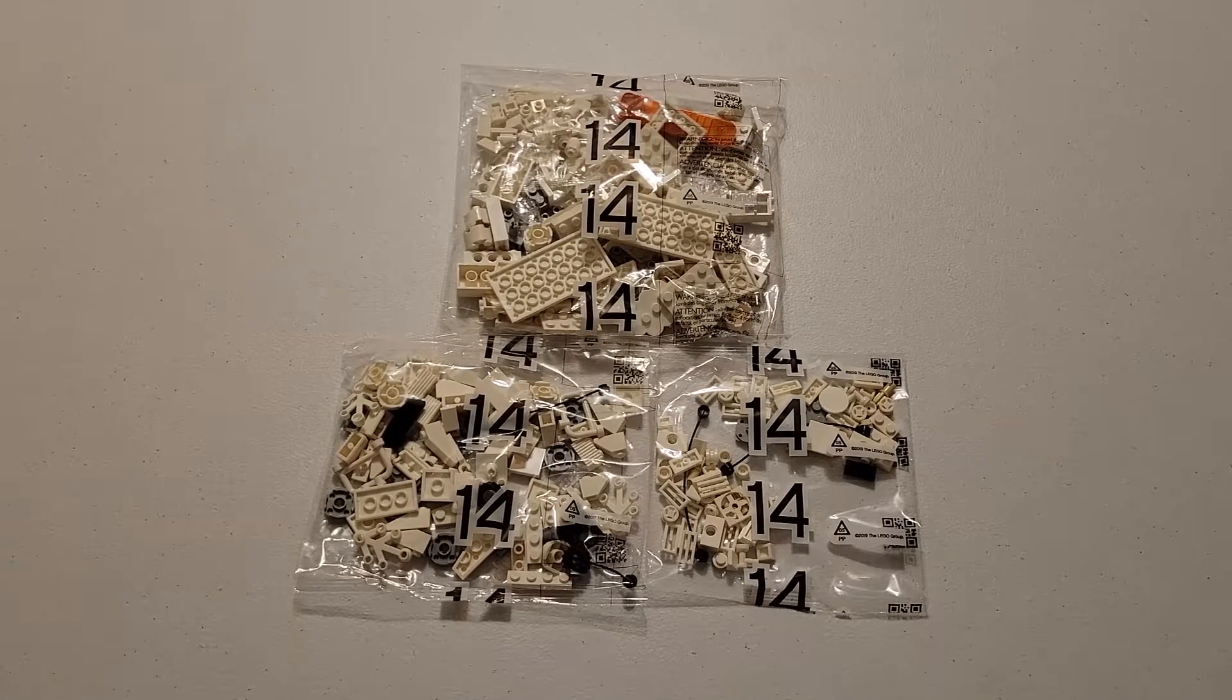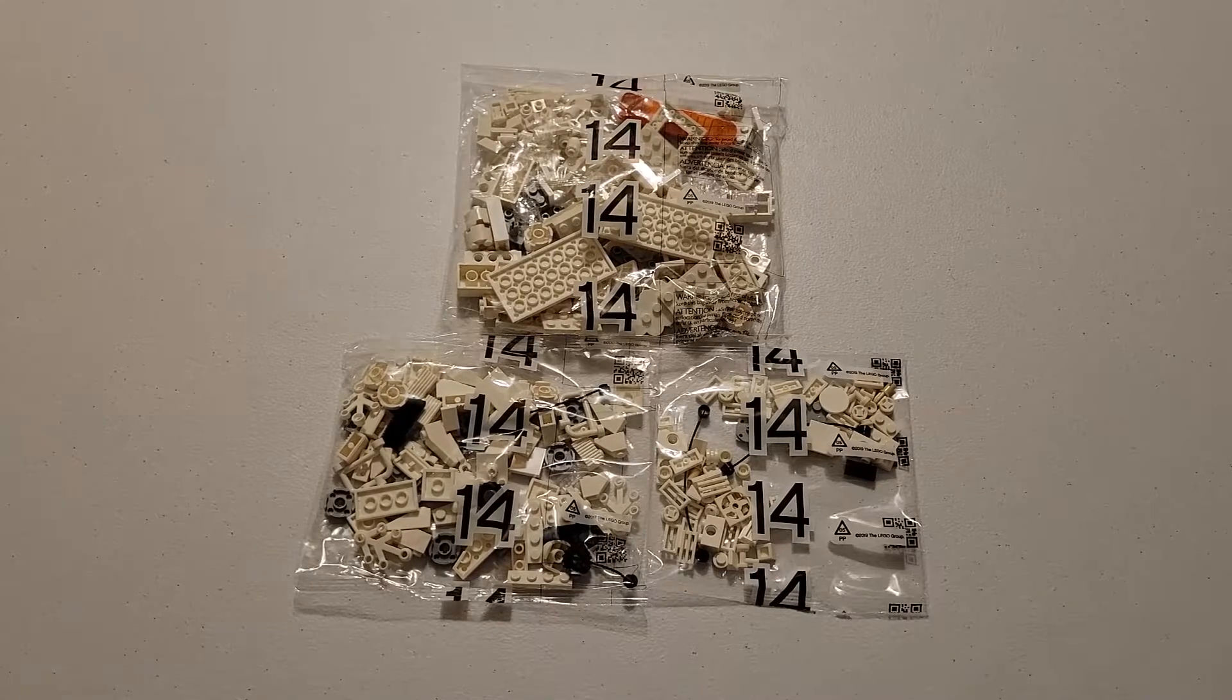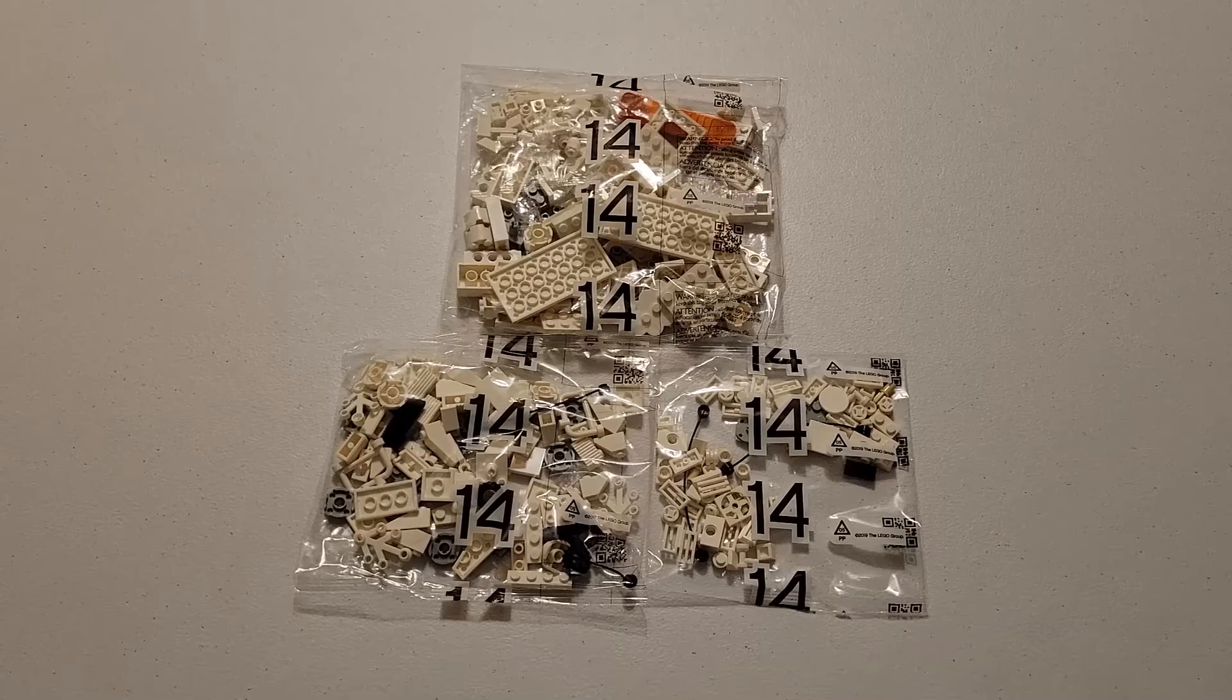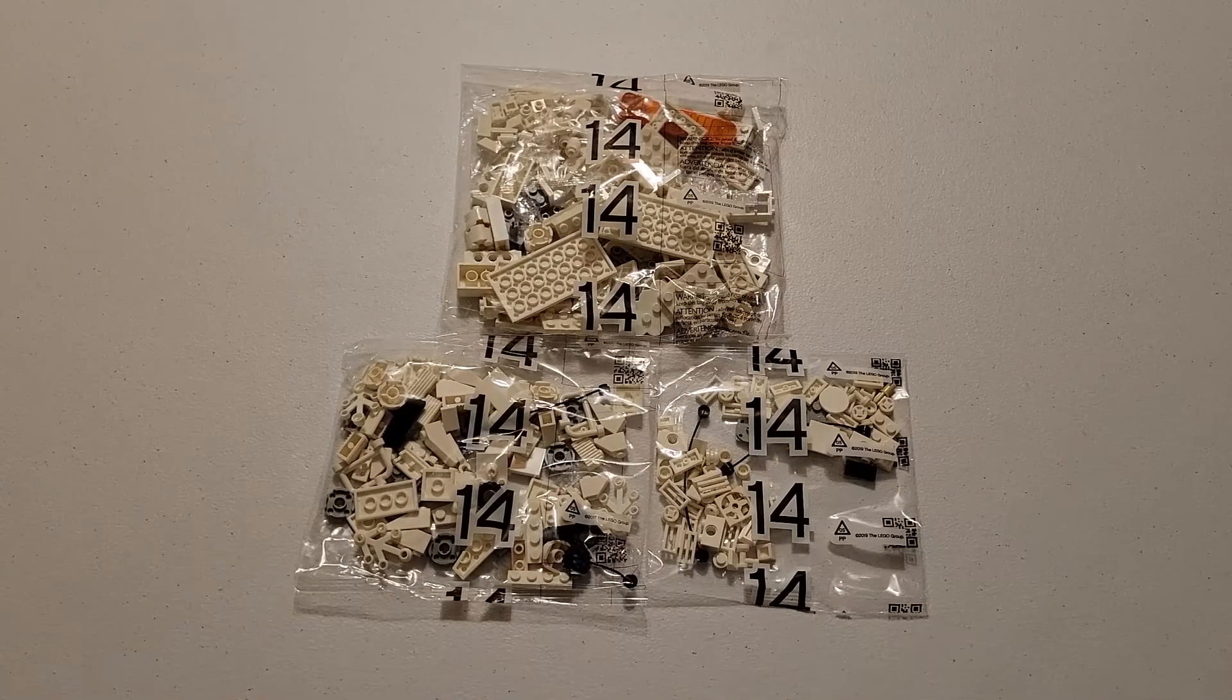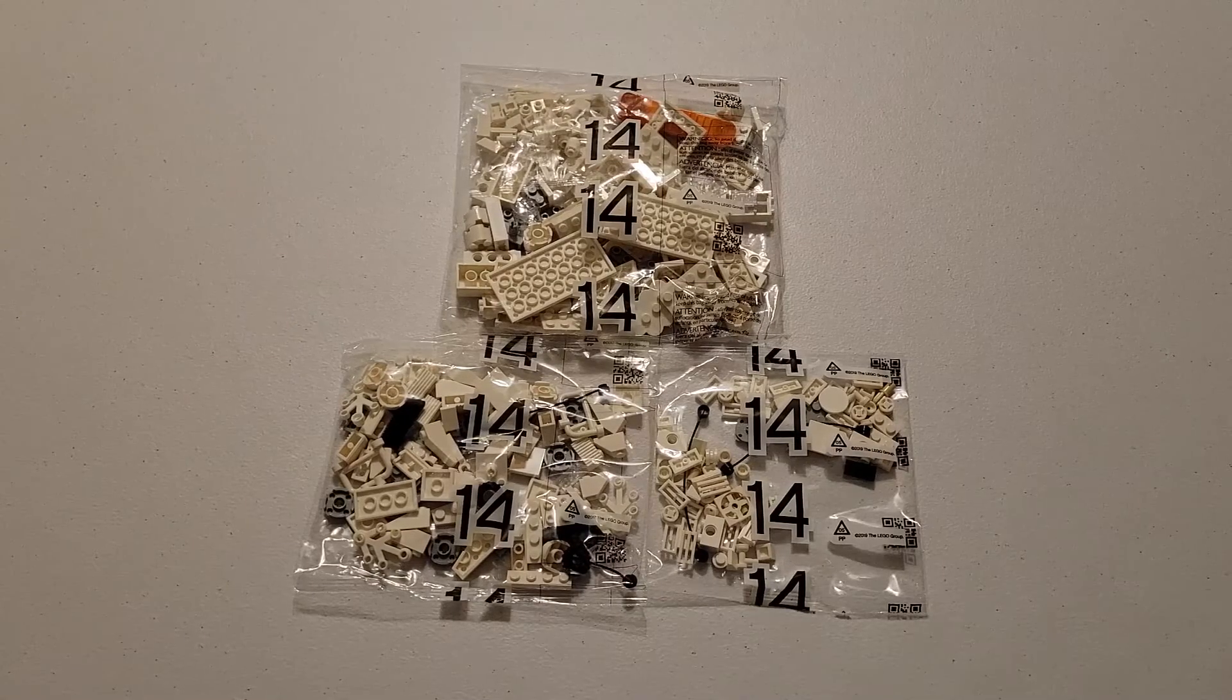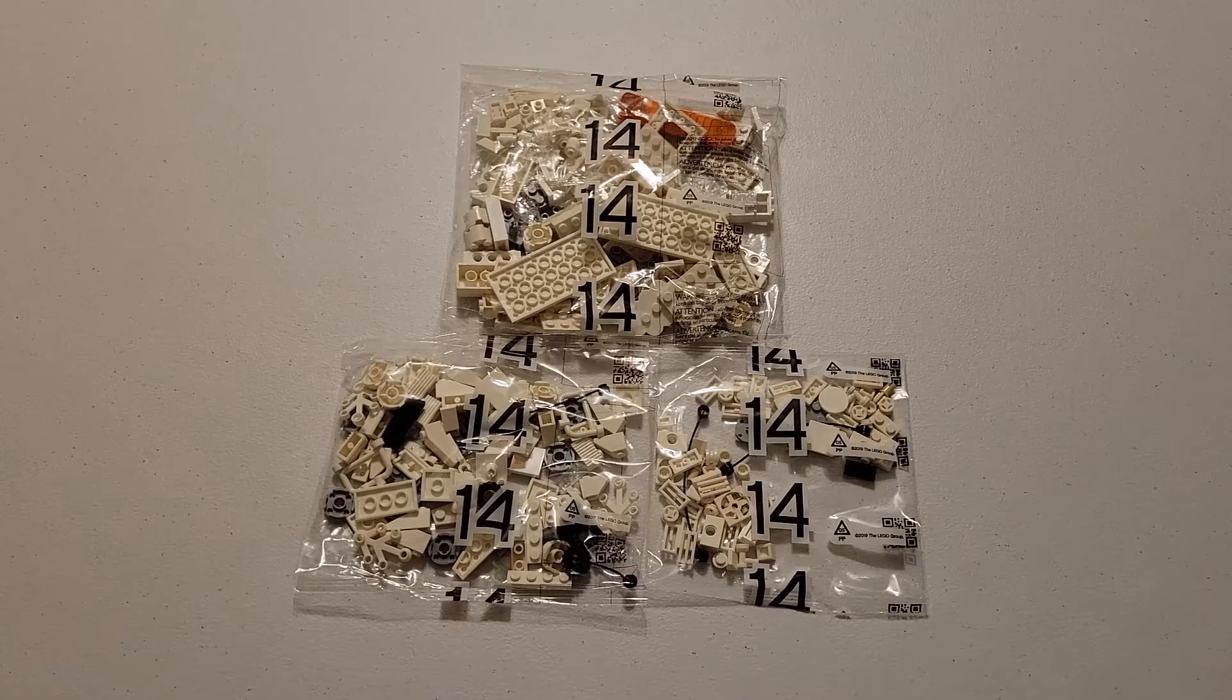Now there are a couple other things to consider. You can get 10 points in the robot game if your innovation project model is at least partly in the hydrogen plant target area in the middle of the field. So you want to make it something that is easy to consistently transport across the field and place, and it wants to be something that does not get in your way for future missions.